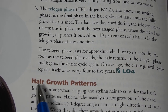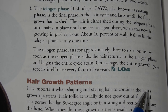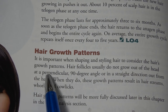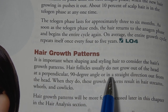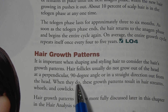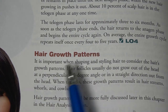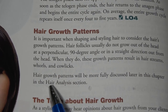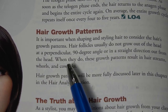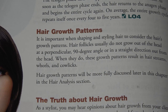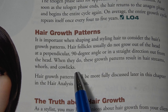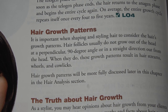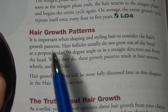Hair growth patterns: when shaping and styling hair, it is important to consider the hair's growth patterns. Hair follicles usually do not grow out of the head at a perpendicular 90-degree angle or in a straight direction. When they do, growth patterns result in hair streams, whorls, and cowlicks. Cowlicks can be challenging to style, and it's important to know which way the hair naturally grows.